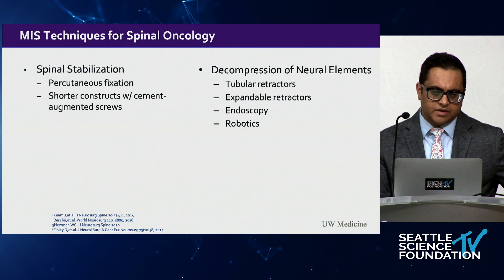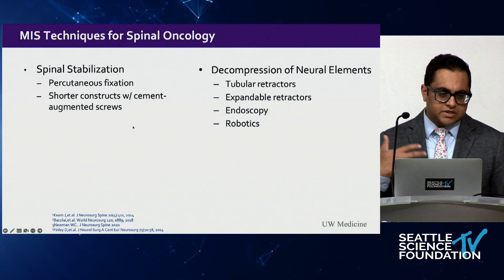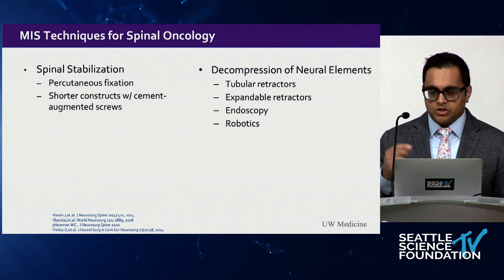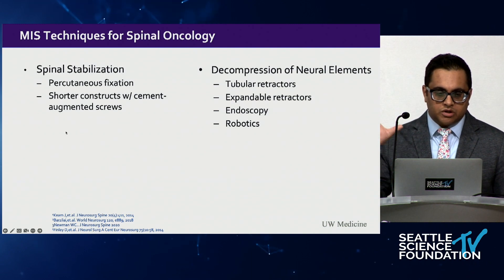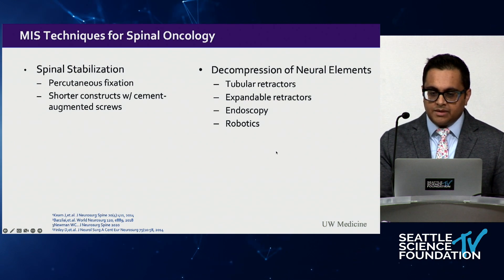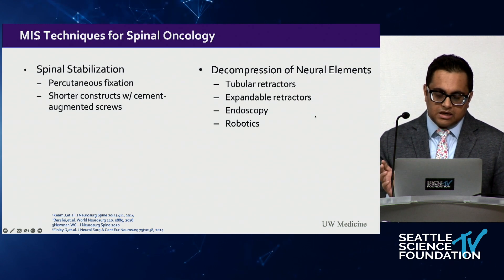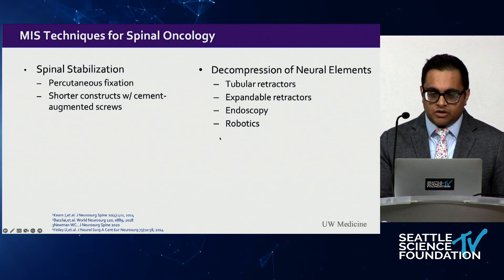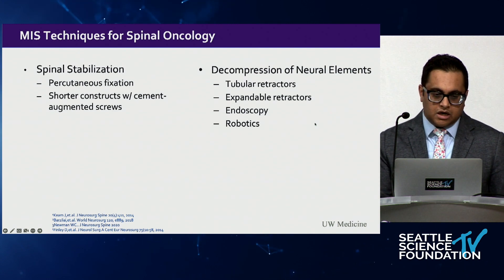In terms of MIS techniques for spinal oncology, we break these down into two categories. For spinal stabilization, we very often use percutaneous fixation techniques—smaller incisions with less chance of wound breakdown—and we've started using cement-augmented screws to go smaller and smaller with our constructs. For decompression, I often use tubular retractors for central decompression or an expandable retractor if I need wider access. Emerging technologies include endoscopy and robotics such as the da Vinci robot.